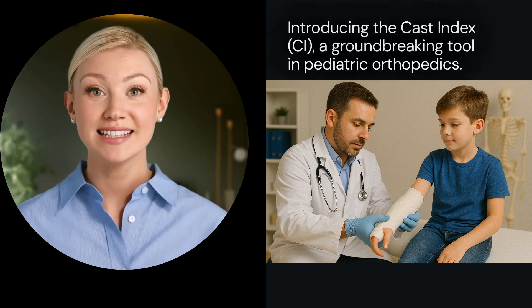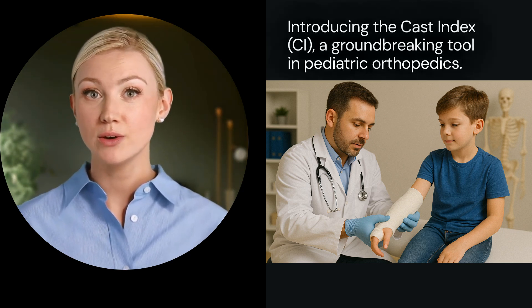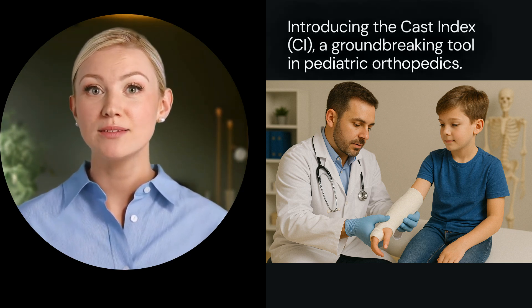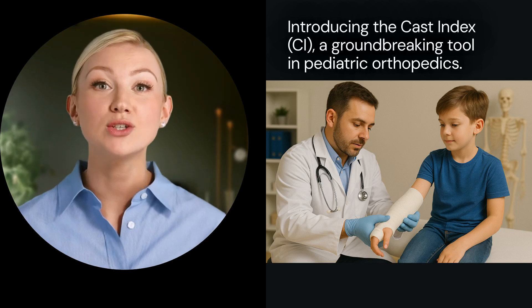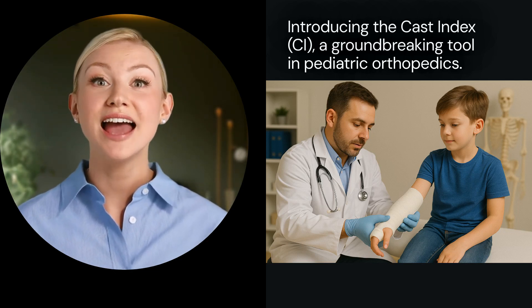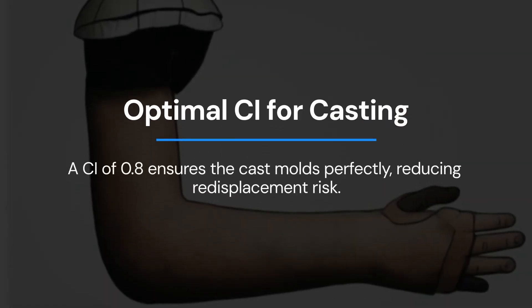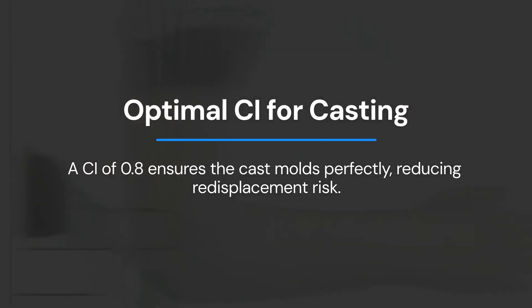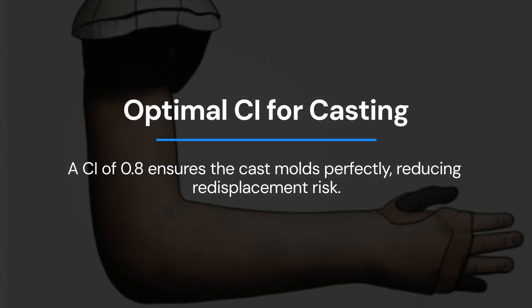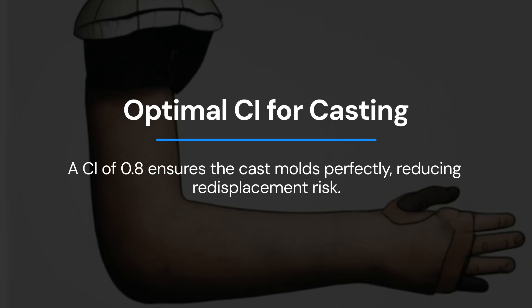Enter the cast index (CI), a revolutionary tool in pediatric orthopedics. It measures the ratio of sagittal to coronal width at the fracture site, ensuring the cast fits snugly. A CI of 0.8 is considered optimal. This precise measurement helps reduce the risk of re-displacement by ensuring the cast molds perfectly to the forearm's natural shape.